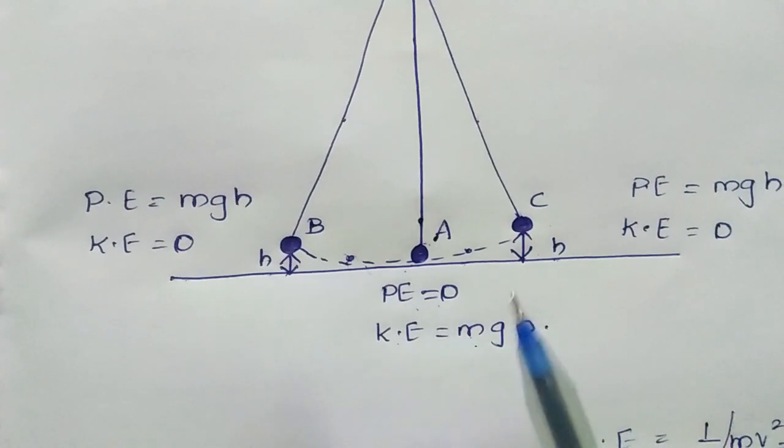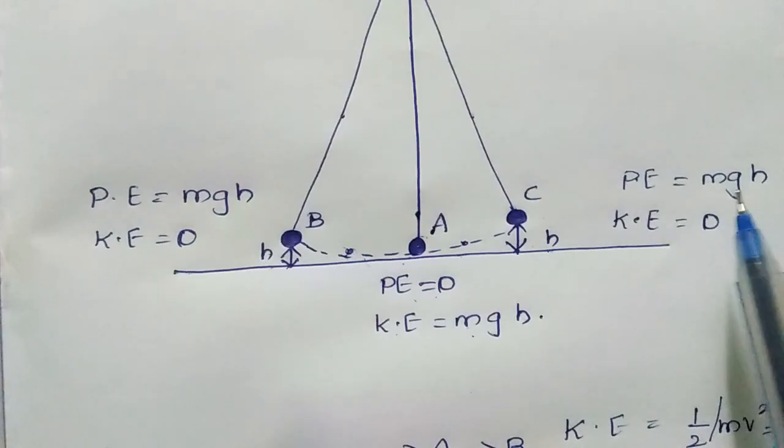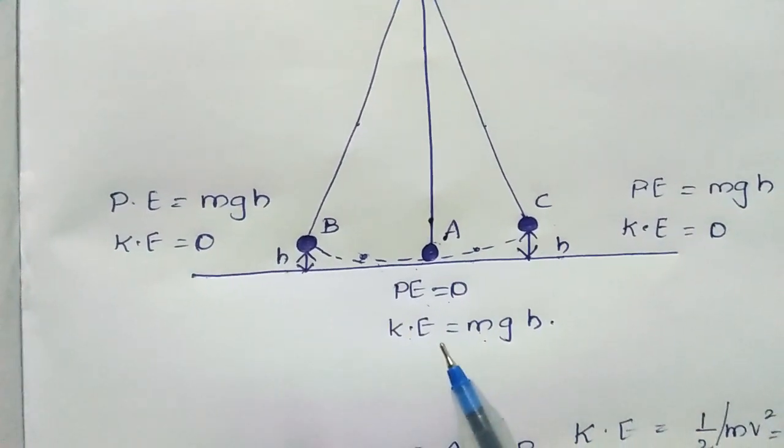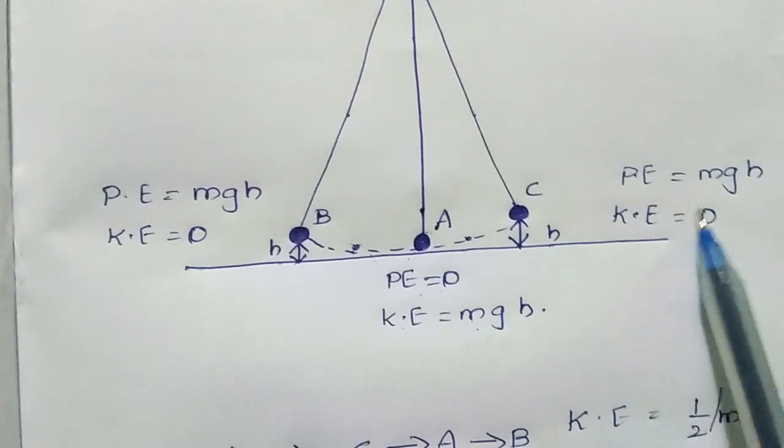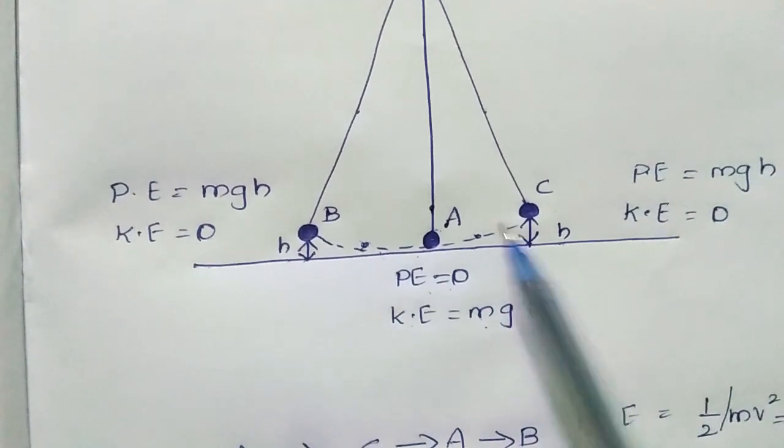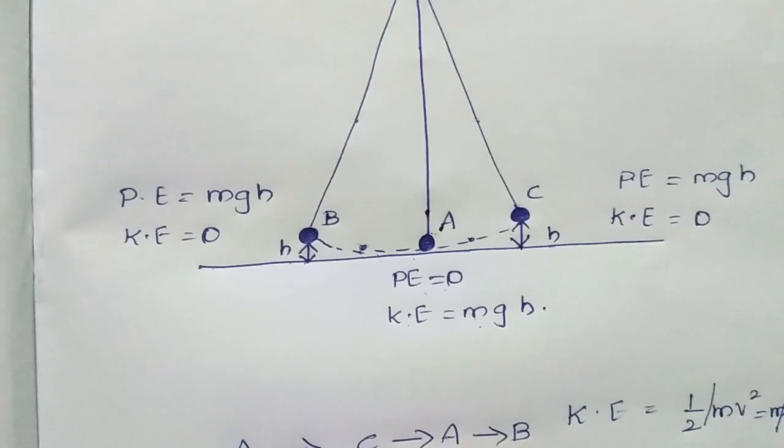The kinetic energy at point A of the bob will be changed to potential energy, and the potential energy at place A is changed into kinetic energy at place C. This is the interchanging of these energy values.